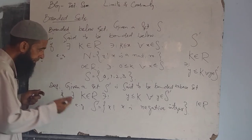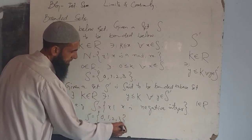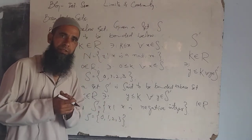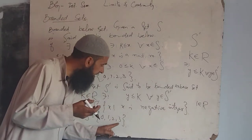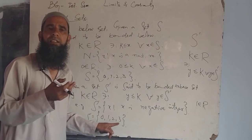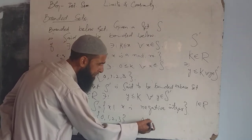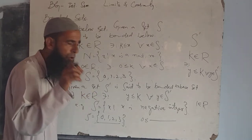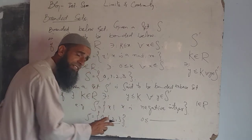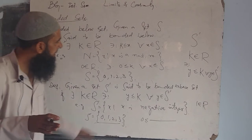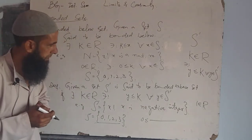It is a bounded above set. Another example: S' equal to {0, 1, 2, 3}. It is also a bounded above set. Clearly, every real number greater than or equal to 3 satisfies the condition that all members of this set — say 0, 1, 2, 3 — are less or equal to that particular real number. This satisfies the condition, so this set is also a bounded above set.